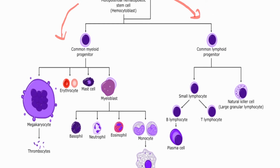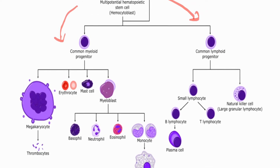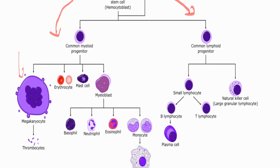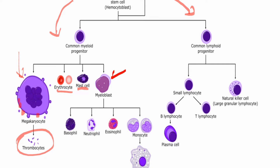From myeloid progenitor cells there is formation of megakaryocytes — the largest cells in the bone marrow, present only in the bone marrow, about 30–35 microns in size. On their surface, platelets (thrombocytes) are formed. Then there are erythrocytes, mast cells, and most importantly myeloblasts — the most immature cells which differentiate into basophils, neutrophils, eosinophils, and monocytes. If these cells accumulate as blasts more than 20%, we call it acute leukemia.